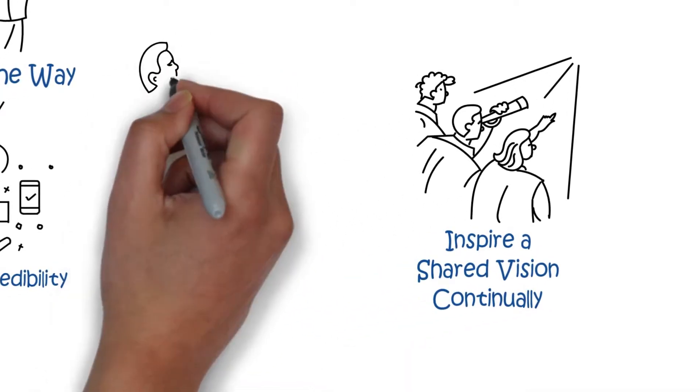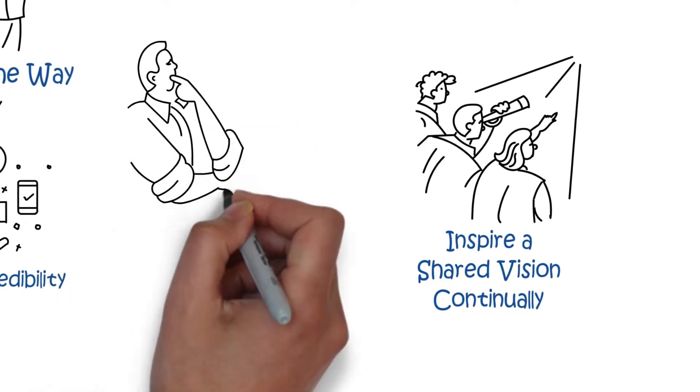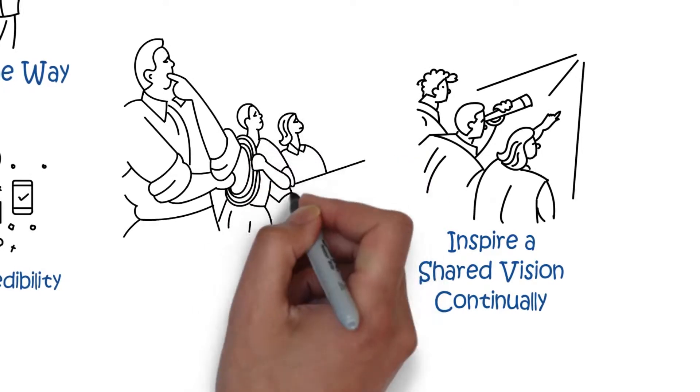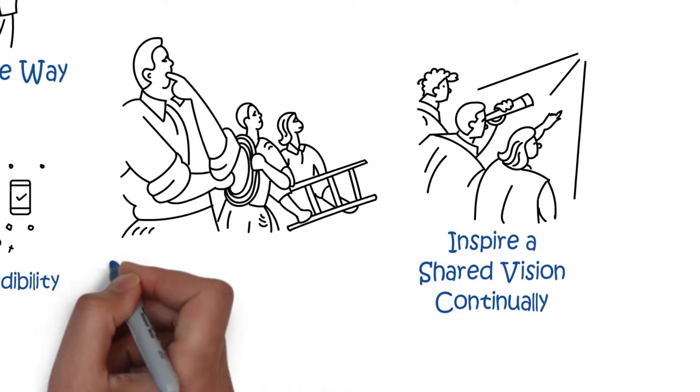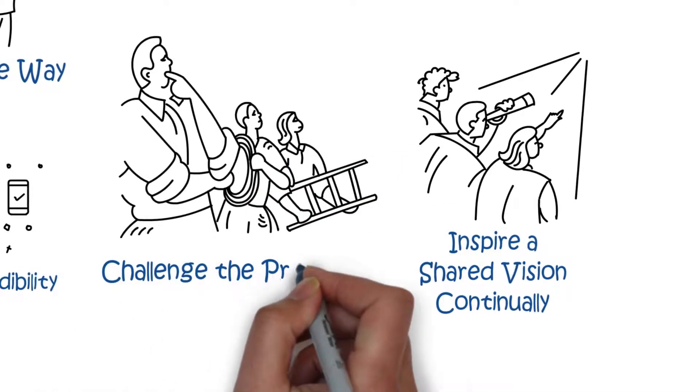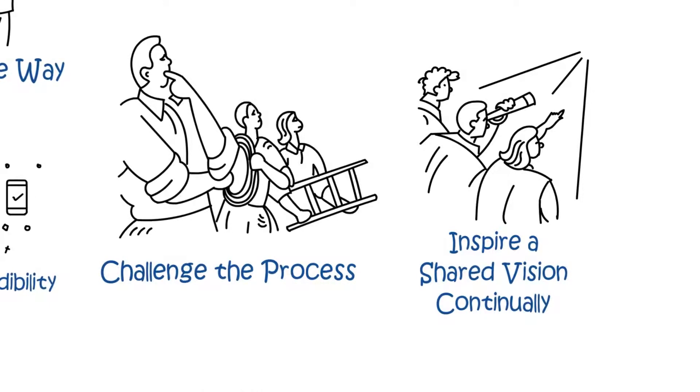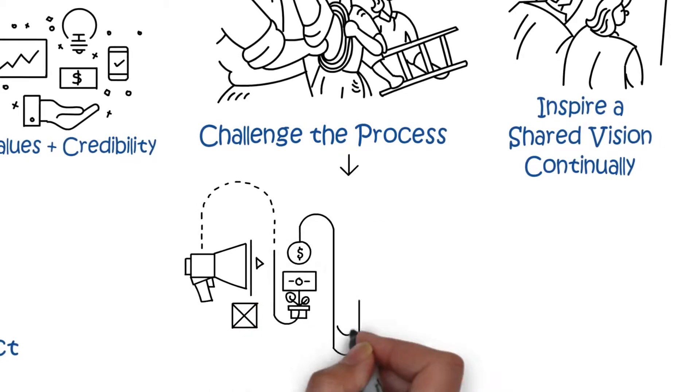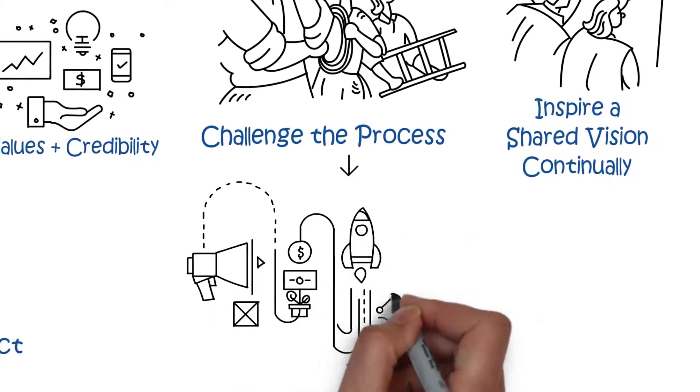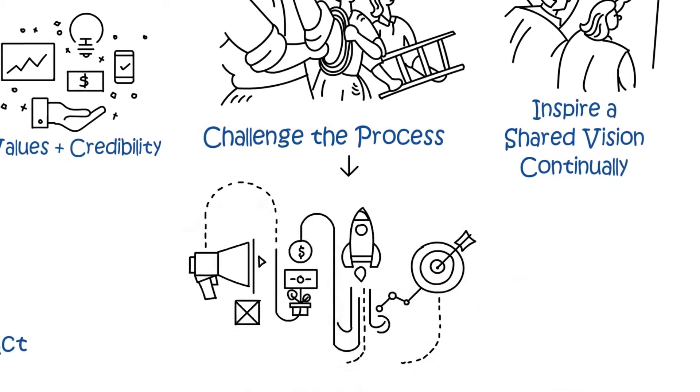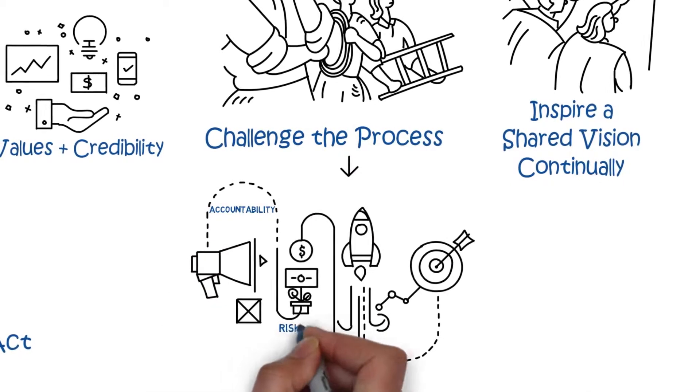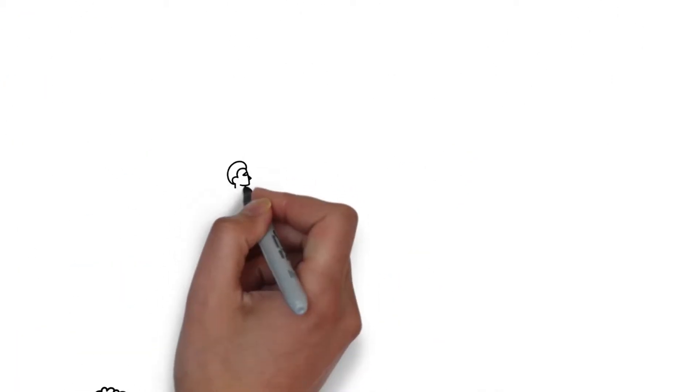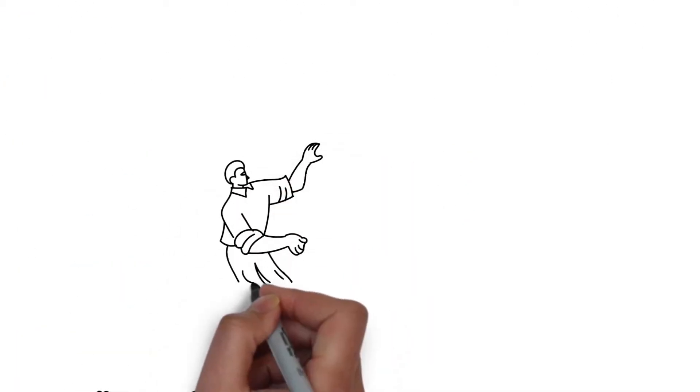The third one is to challenge the process. That's about innovation, it's about taking some risks and learning, it's about being able to even think about the steps it would take to make something happen and then holding others accountable to it. So there's some process within that but it doesn't have to be complacent and it doesn't have to be status quo. It's about thinking what's new, what's next.